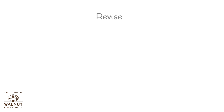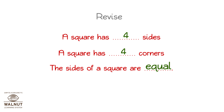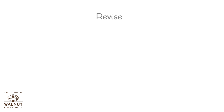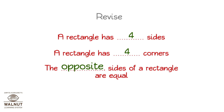Review: A square has four sides. A square has four corners. The sides of a square are equal. A rectangle has four sides. A rectangle has four corners. The opposite sides of a rectangle are equal.